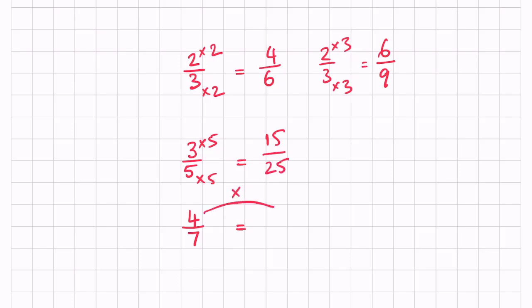Let's find equivalent fractions to 4 sevenths. So let's pick a number. Let's say 6 and 6. That would give us 6 times 4 is 24, and 6 times 7 is 42.